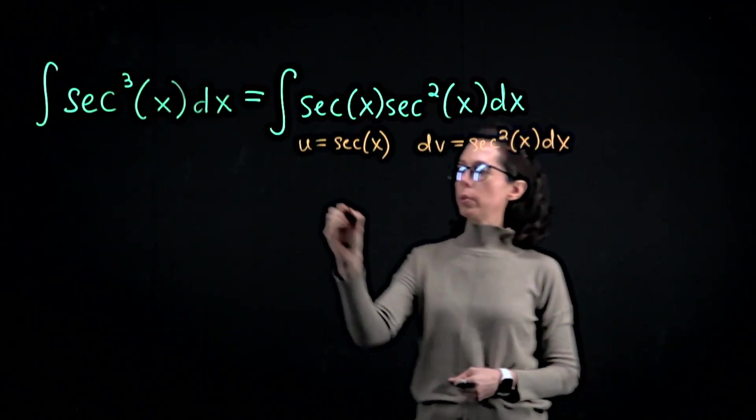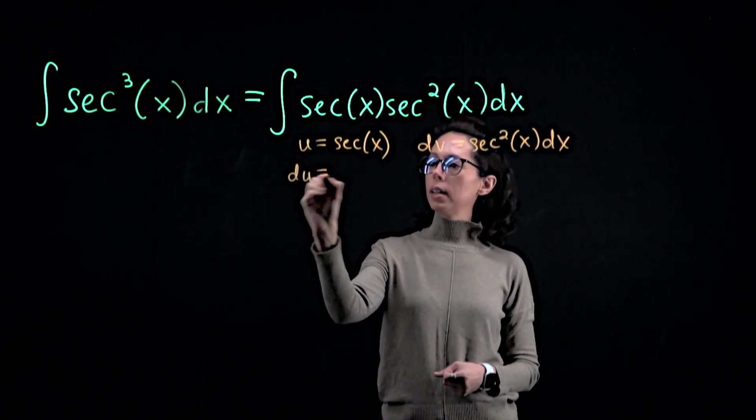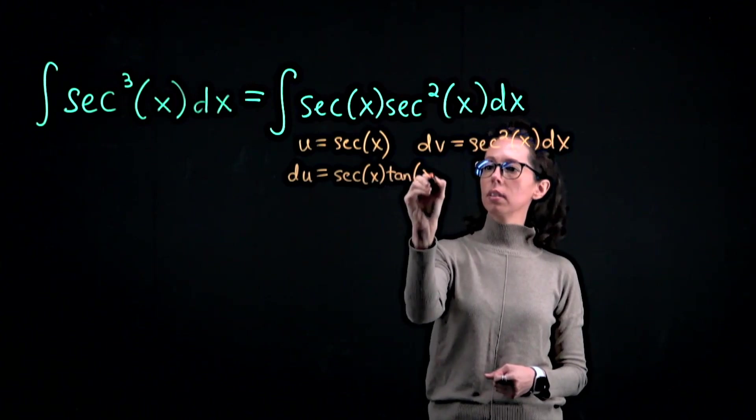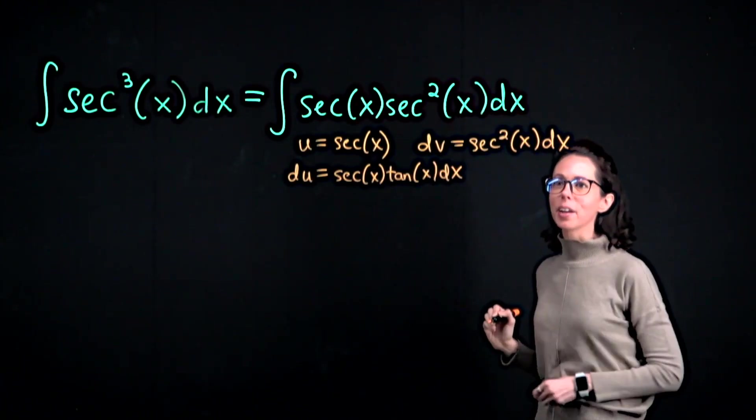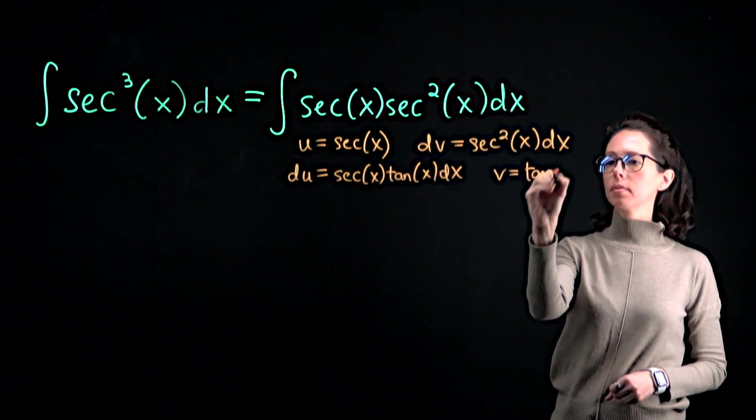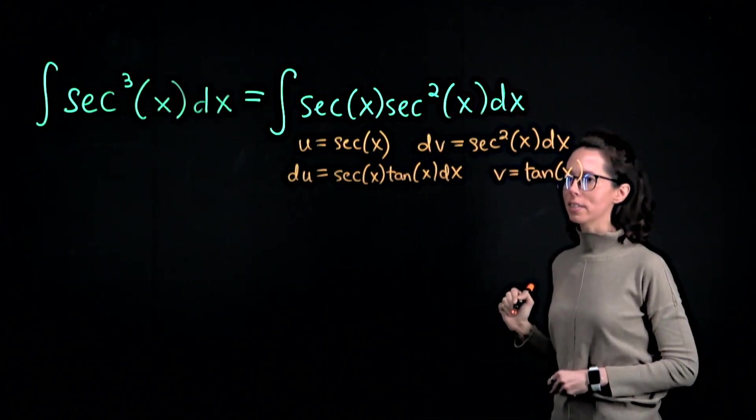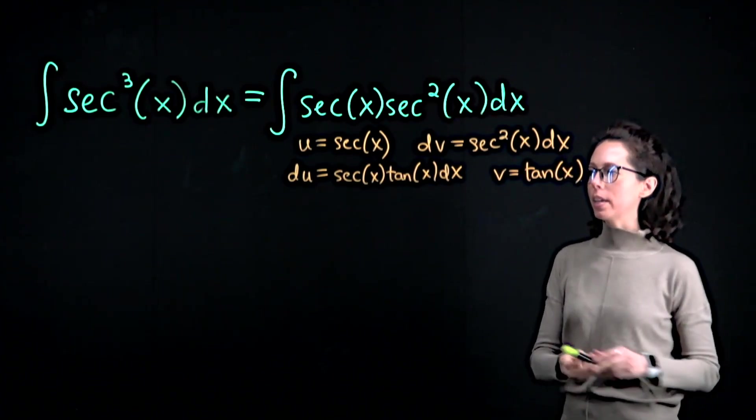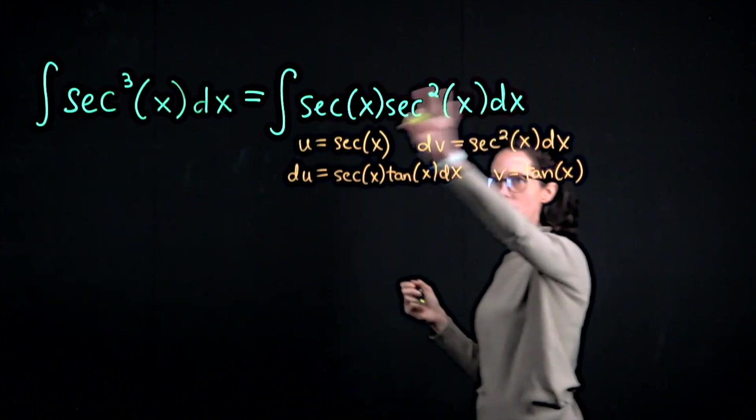To get down to the next line we will need to know that du is secant tangent, and off to the right v is just tangent. All right, with this integration by parts decomposition we can now say that this right hand side...